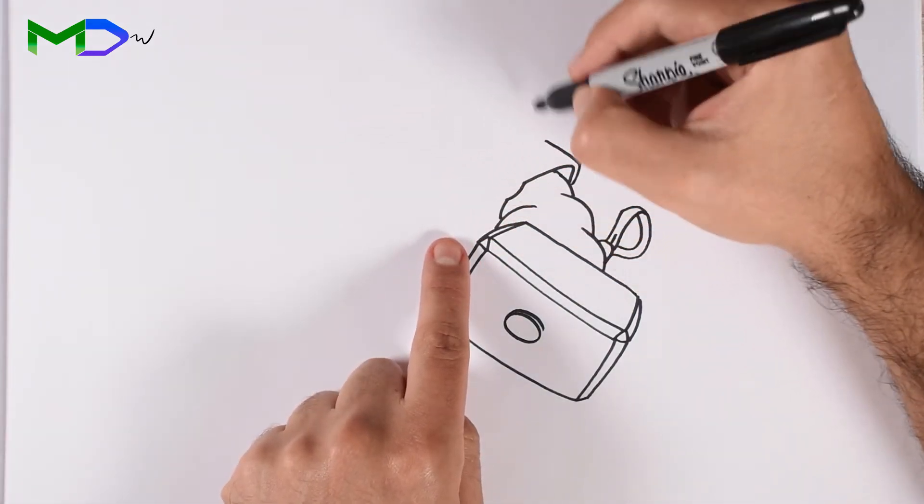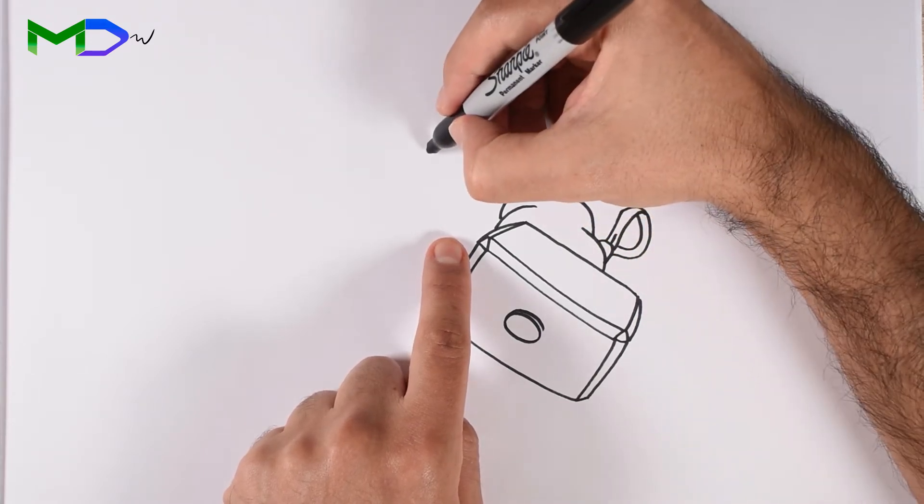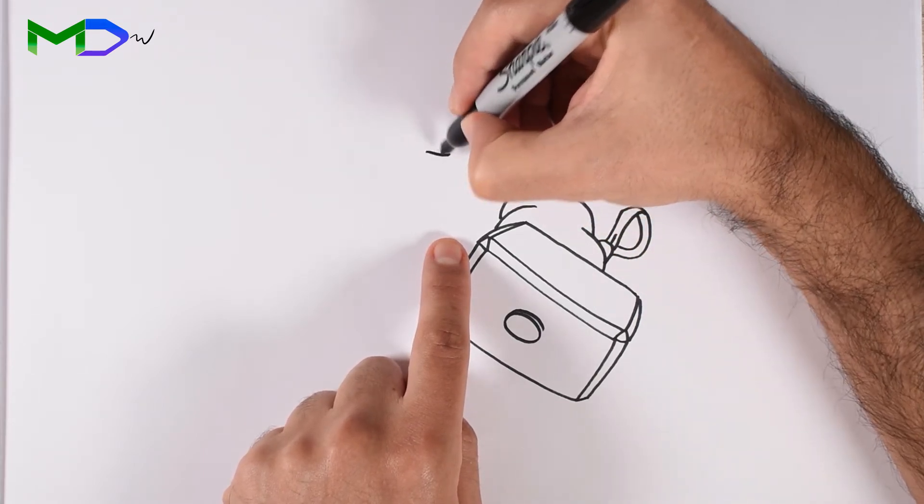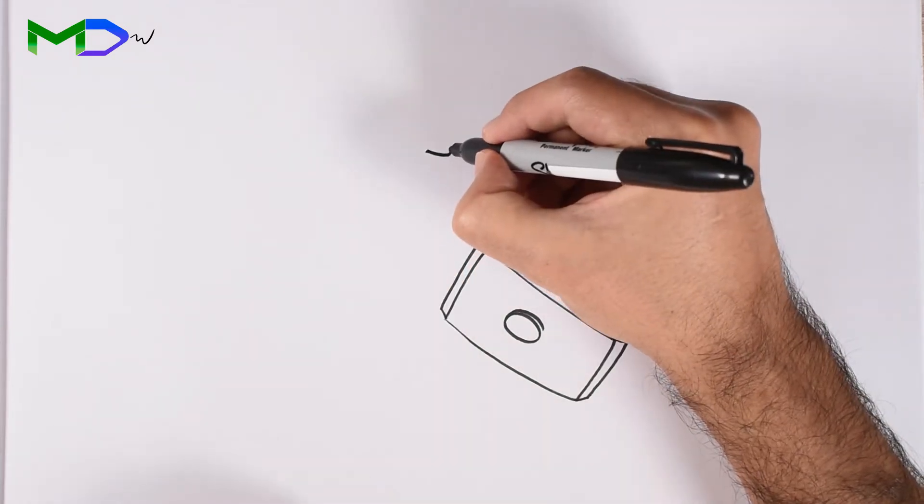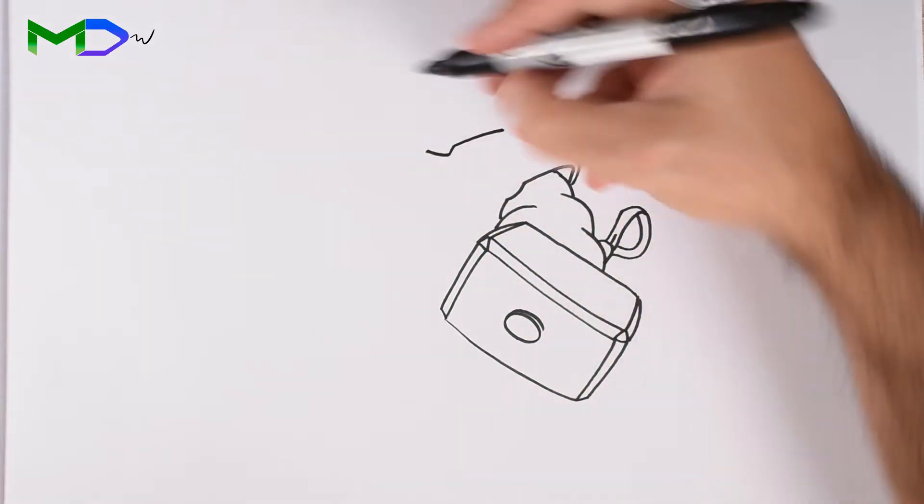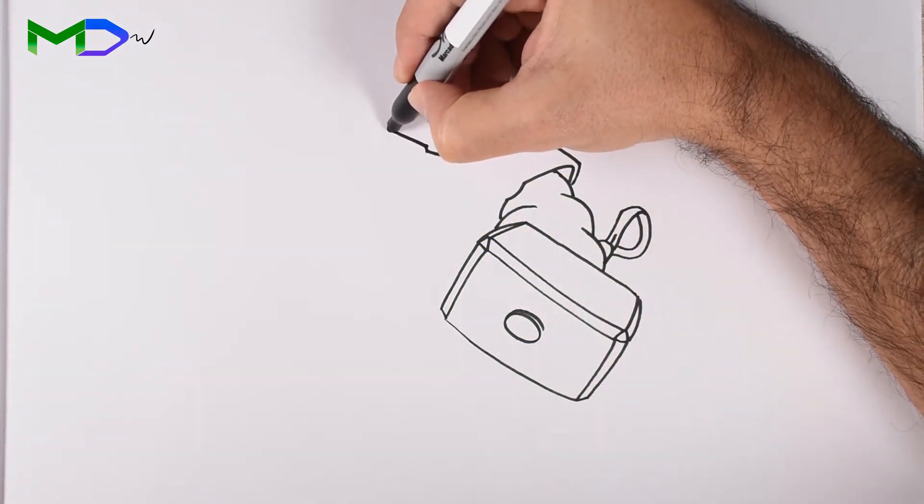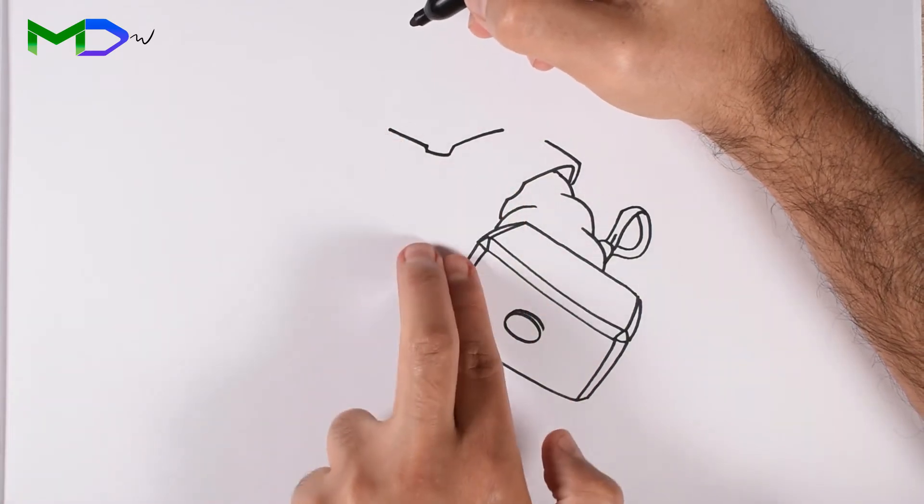Now let's go with the face and the helmet. Start with the line at the center, then going to each side, and from this part at the center, create the face.